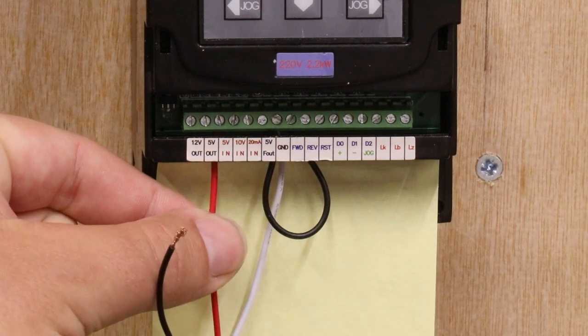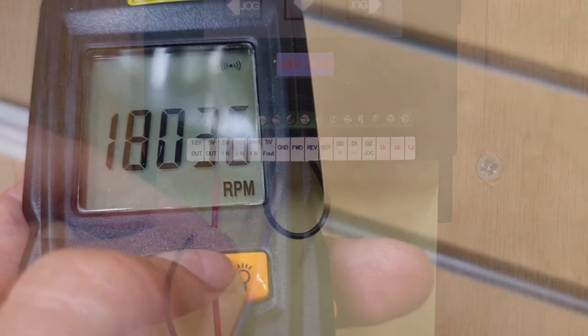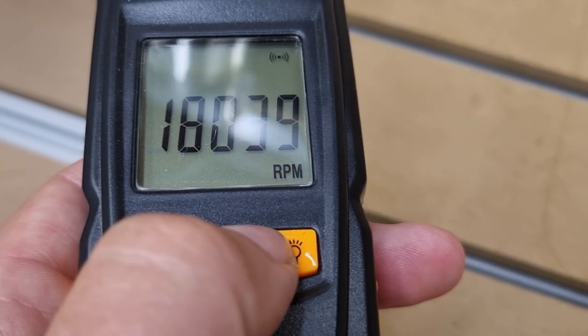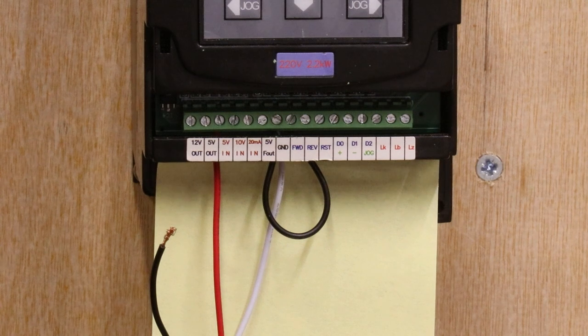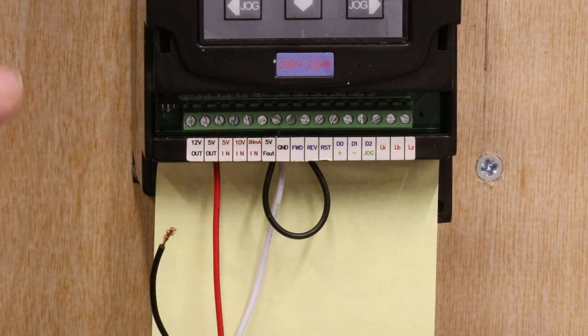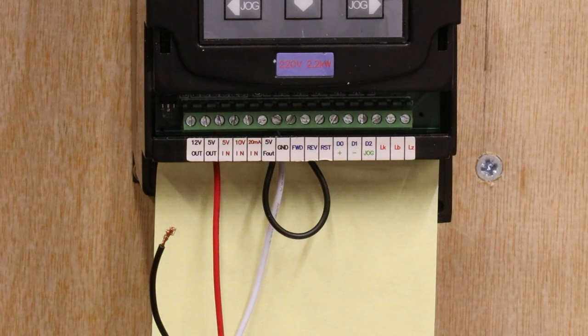So ultimately what that means is it's only going to tell the spindle to run at three quarters of the power. So on using this setup here, the spindle maxes out at around 18,000 rpm. Obviously it has a top range of 24,000 rpm, so whilst it does work, it's technically not getting the spindle to the top speed, so therefore I needed to look for another solution.